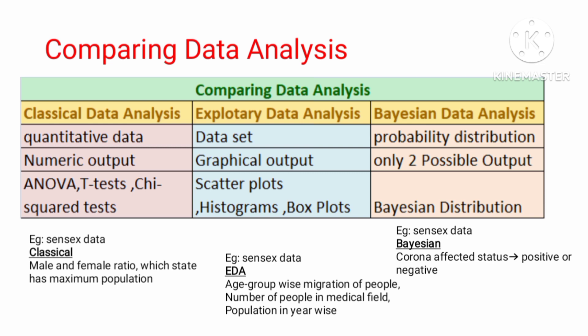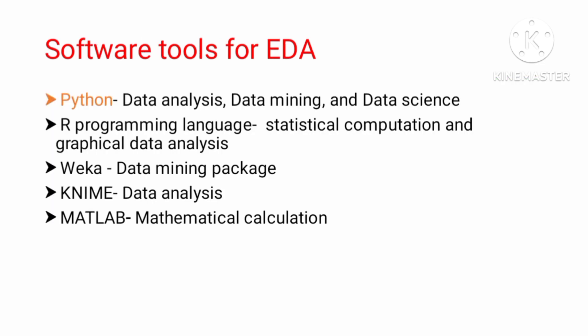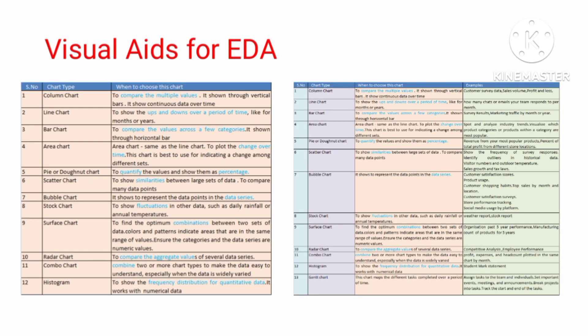For software tools, Python and MATLAB are among the many tools available at a universal level. For visual aids in EDA — to visualize data, you choose a chart based on what the data represents. A column chart is used for multiple values, and a line chart is used to show ups and downs easily.